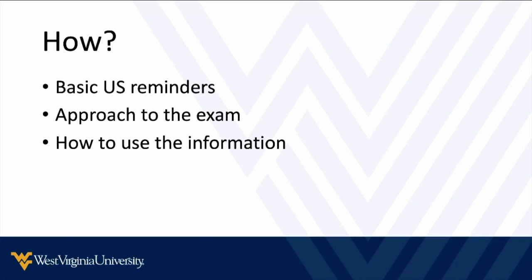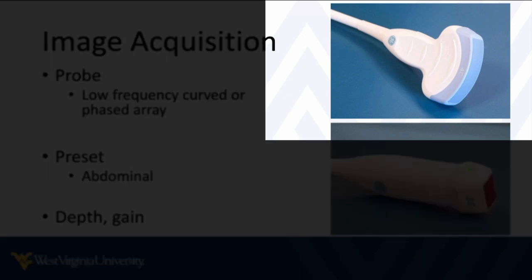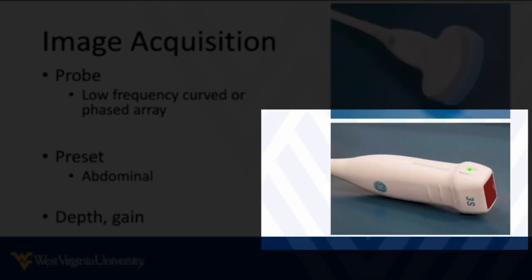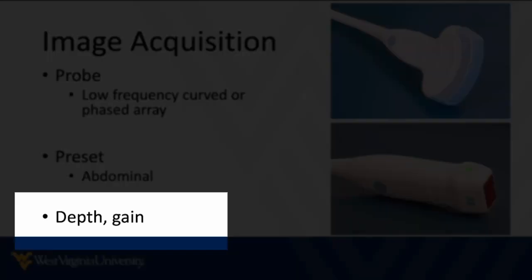We'll talk about basic reminders of what findings we're looking for, the approach to the exam, and how to use that information to help take care of patients. Quick reminders about acquiring the image: most of the time we'll use the low-frequency curvilinear probe, which is the ideal probe if available. A phased array probe is perfectly acceptable as well. Our preset will be an abdominal preset — many machines now have FAST presets. The key things to manipulate on the machine are depth and gain.